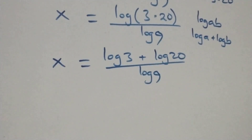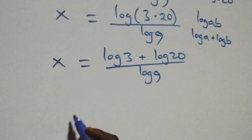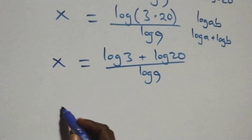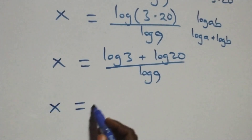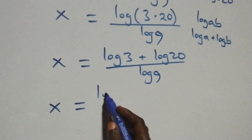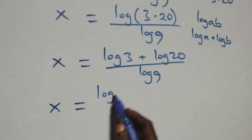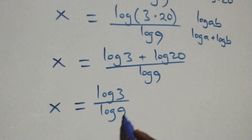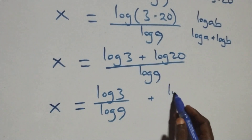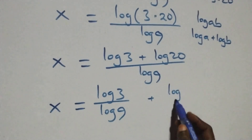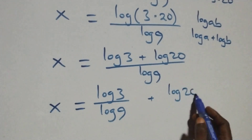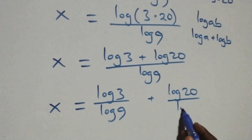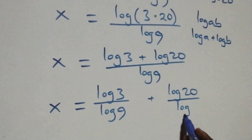We separate this into two fractions: x equals log 3 over log 9, plus log 20 over log 9.